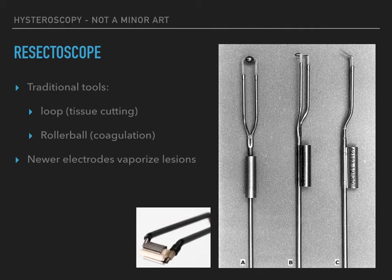Traditionally, radiofrequency tools for the resectoscope have included the loop for tissue cutting and a rollerball for coagulation. However, newer vaporizing electrodes like the VersaPoint have been introduced. These electrodes vaporize lesions and thus eliminate the need to remove floating pieces of tissue. They are not appropriate for procedures in which a specimen is needed for histology.